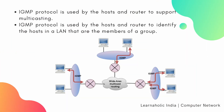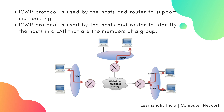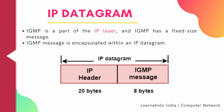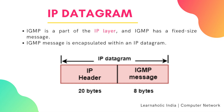The IGMP protocol is used by the hosts and router to support Multicasting. It is also used by the hosts and router to identify the hosts in a LAN that are members of a group. The following figure shows how IGMP works to find out hosts in a local area network. Now let's see IP Datagram for IGMP.